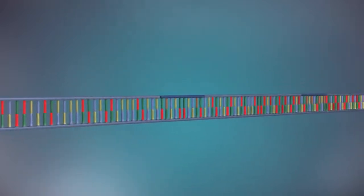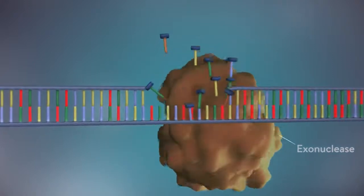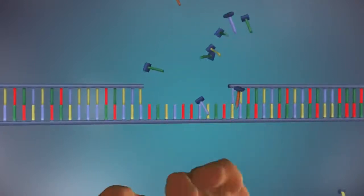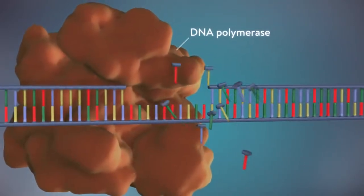Once the new DNA has been made, the enzyme exonuclease removes all the RNA primers from both strands of DNA. Another DNA polymerase enzyme then fills in the gaps that are left behind with DNA.